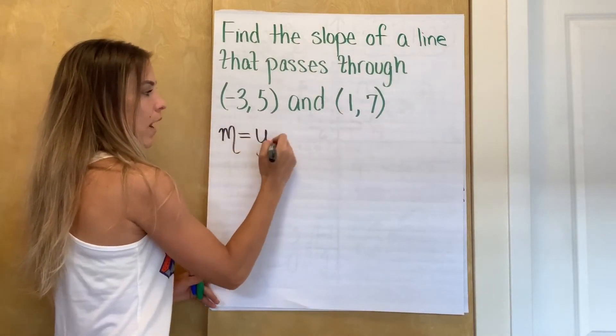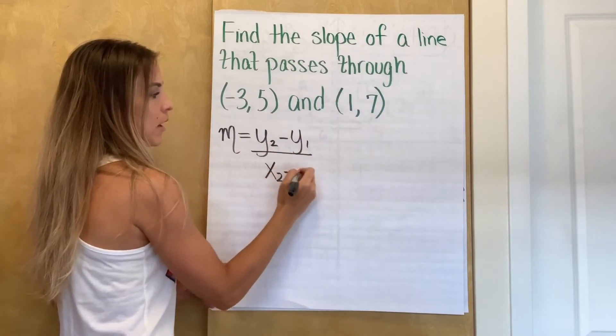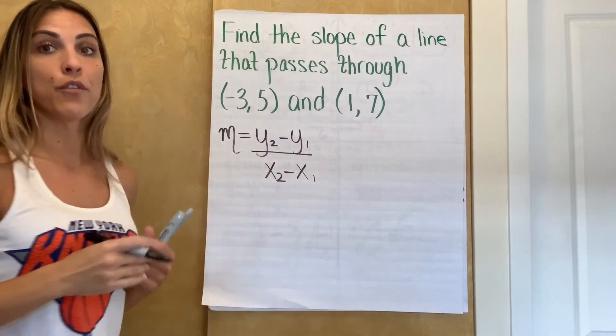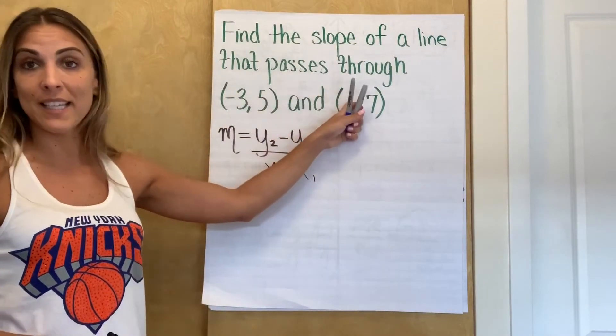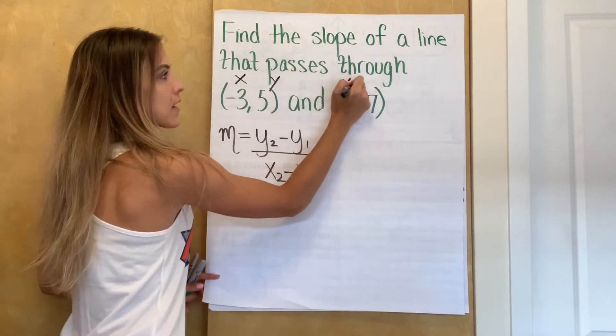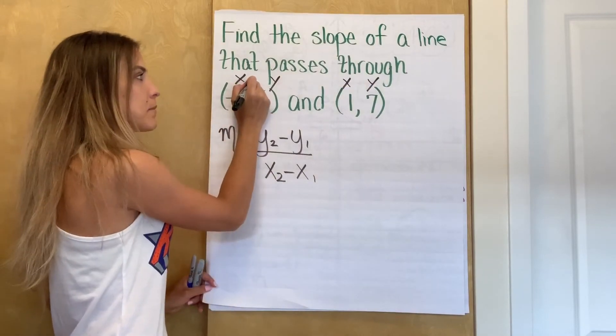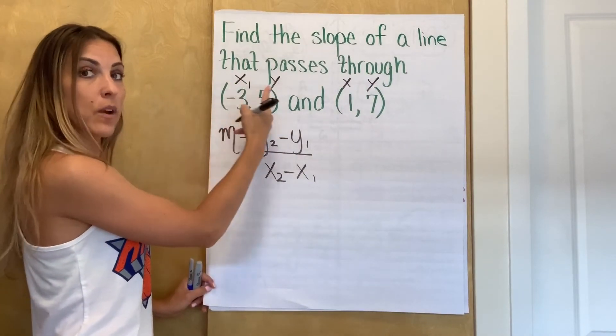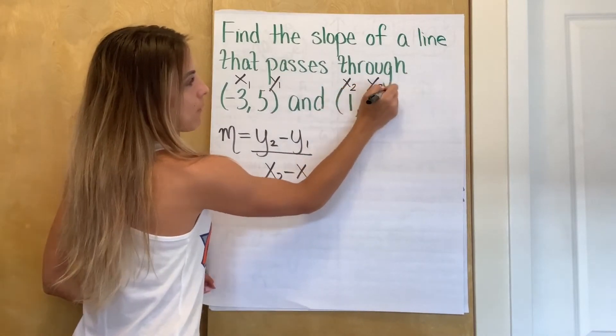So m equals y2 minus y1 over x2 minus x1. So now if you remember from before, my next step would have been to label. So let's go up into these points and let's label them. So again, my points always have an x and a y, an x and a y, but now I'm going to label them. So I'm going to call this my x1. And if that's my x1, this one better be my y1. And I'll call this my x2 and my y2. Okay.